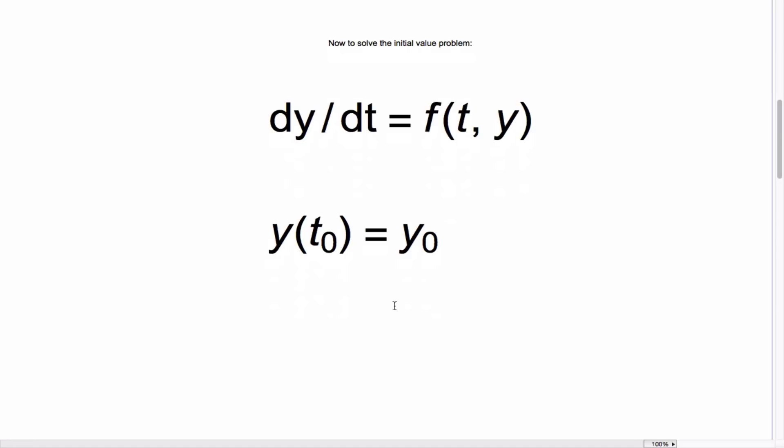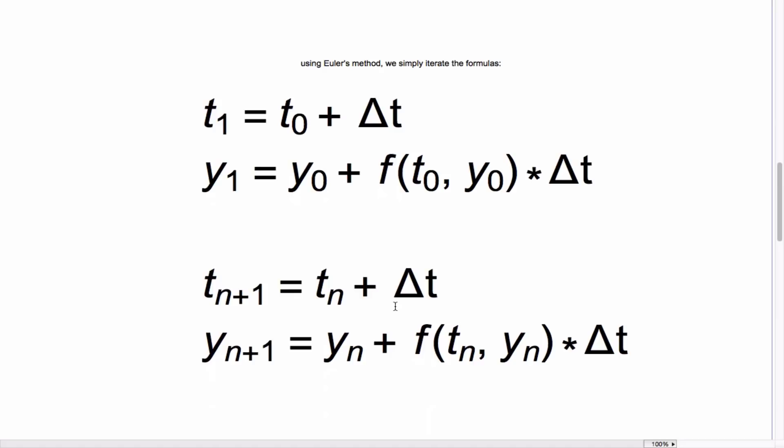To numerically solve this equation, we break the t-axis up into a grid of points with a separation delta t. And so notice the next t value is equal to the previous t value plus the separation.